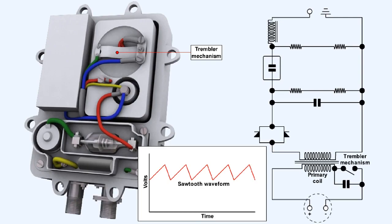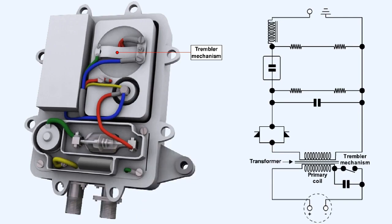This sawtooth waveform is a very crude form of alternating current. Because we've generated alternating current, we can use a transformer to boost the voltage in the primary coil to 25,000 volts in its secondary coil.